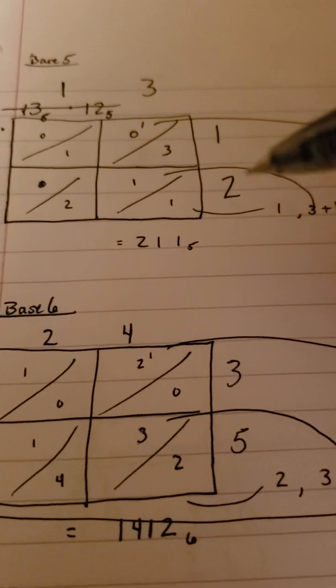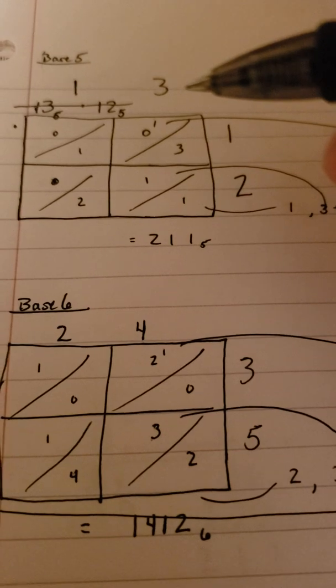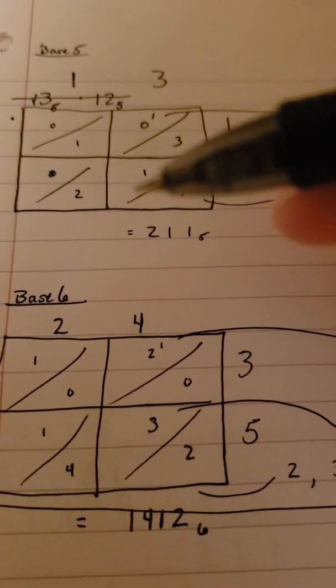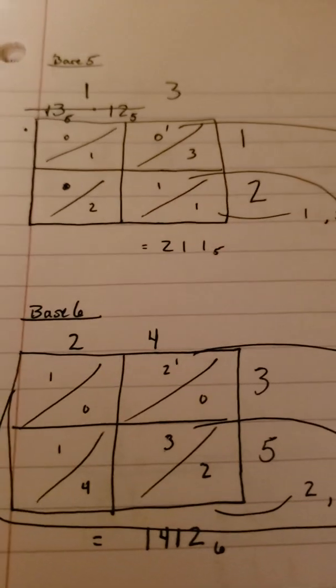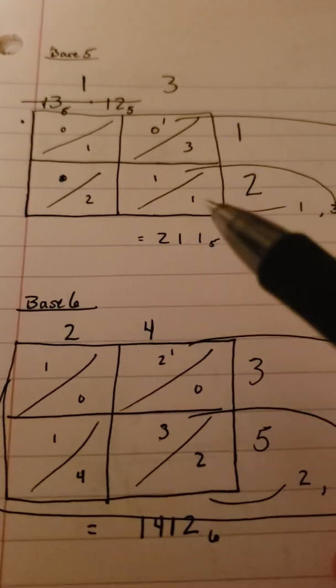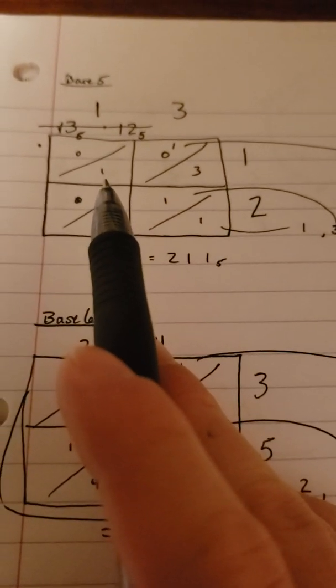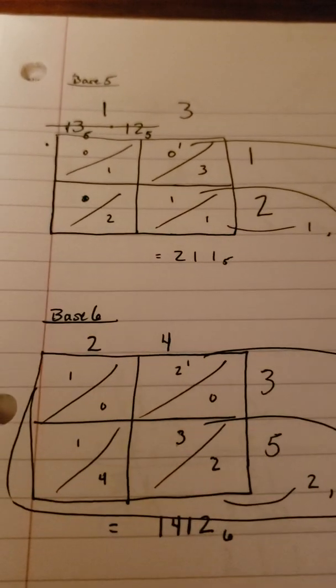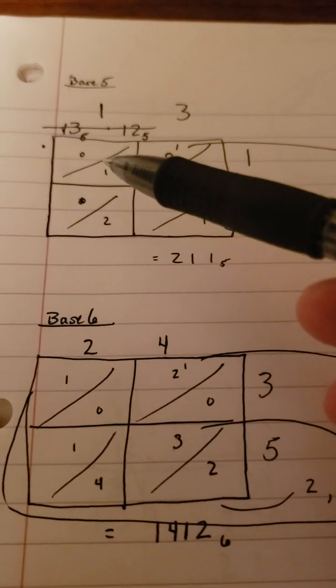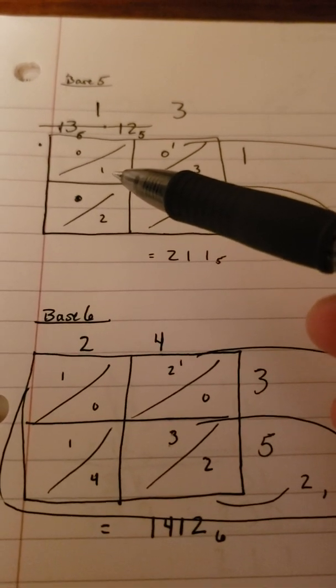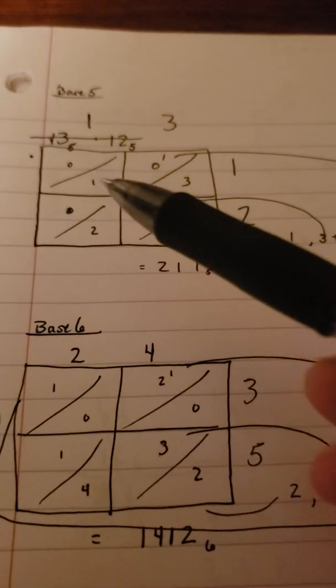Then we multiply 2 times 3, which is 6. At 6 in base 5, we can get 1-5 and 1 leftover. So that's what we write right there. Then we do 1 times 1, which is 1. So we have 0-5s and 1 leftover. And then we do 2 times 1, which is 2. So we have 0-5s and 2 leftover.